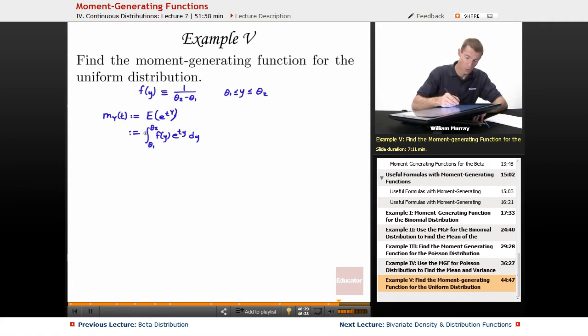So now we just have to do some calculus. This is the integral from theta 1 to theta 2 of, f of y is 1 over theta 2 minus theta 1, that's just a constant there, e to the ty dy. Not such a bad integral, really not too bad.